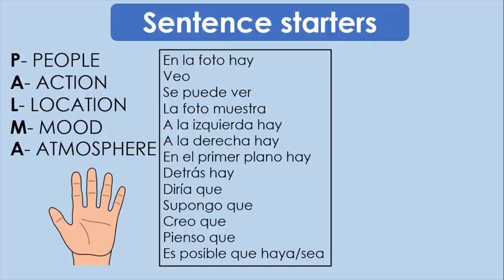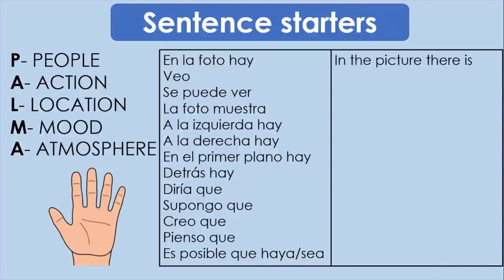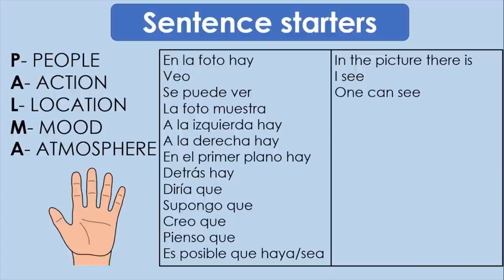These sentence starters could be: 'en la foto hay', which translates to 'in the picture there is' — or 'hay' if there are more things. 'Veo' translates to 'I see'. 'Se puede ver' means 'one can see' or 'where you can see'.